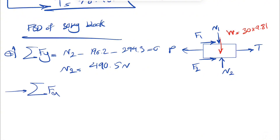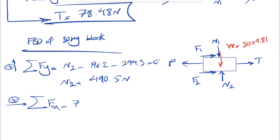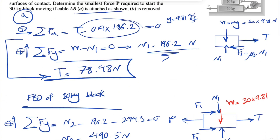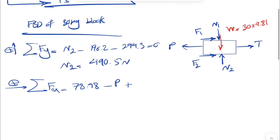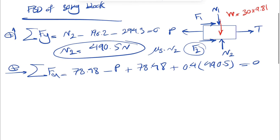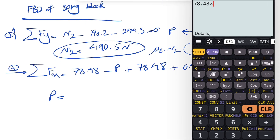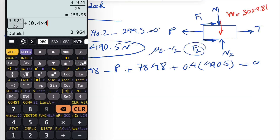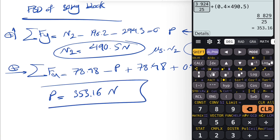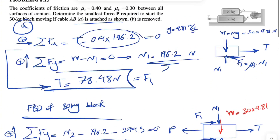For sum of forces in X: T + F1 + F2 minus P = 0. We have T = 78.48, F1 = 78.48 (equal to T from previous part), and F2 = μs × N2 = 0.4 × 490.5. So P = 78.48 × 2 + 0.4 × 490.5 = 353.16 Newtons. That's the answer for Part A with cable AB attached.